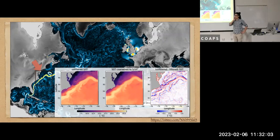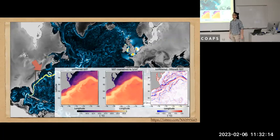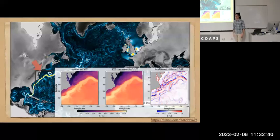Q: When you're coarsening, do you subsample or average? A: Box car average. On the right panel I just showed the difference between the unfiltered and coarse grain, so we miss all these sharp filaments basically. As a result, the atmosphere also doesn't see these sharp fronts, so there's an effect on air-sea fluxes as well.